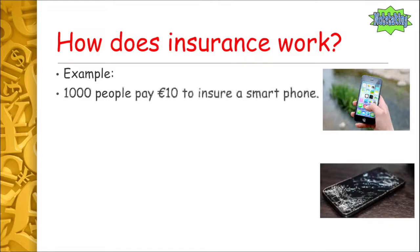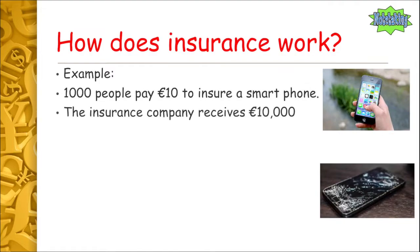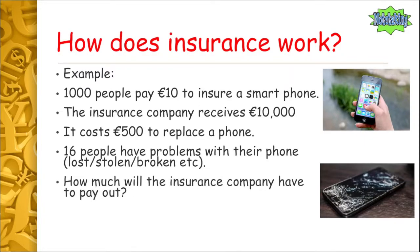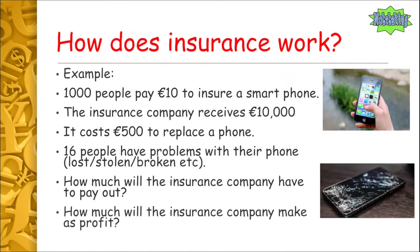Let's look at a specific example using smartphones. Say a thousand people each pay €10 to insure their smartphones against breaking, damage, loss, etc. The insurance company receives €10,000 in total. Each phone costs €500 to replace. Sixteen of those thousand people have had problems with their phone — lost, broken, or stolen. Pause the video and work out how much the insurance company has to pay out and how much profit they make.